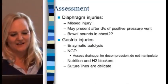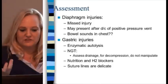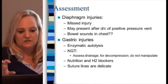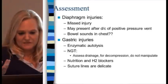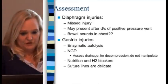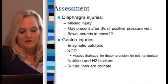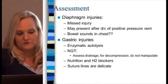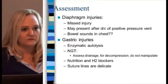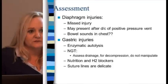Gastric injuries involve enzymatic autolysis — with pancreatic injuries, gastrointestinal fluids are more acidic and friable to the tissues. It's almost like a burn inside your tissues, which is very bad. For the NG tube, assess the drainage — it's for decompression and you don't manipulate it much. Nutrition and H2 blockers are always important. Suture lines are very delicate — we had a case the other day where suture lines didn't hold; frank blood came out of the ostomy tube after gastric surgery and his hematocrit went from 42 to 18.